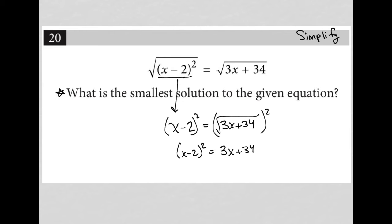Then I should expand this x minus 2. So it would become x squared minus 2x minus 2x plus 4 equals 3x plus 34. So this is x squared minus 4x plus 4 equals 3x plus 34.